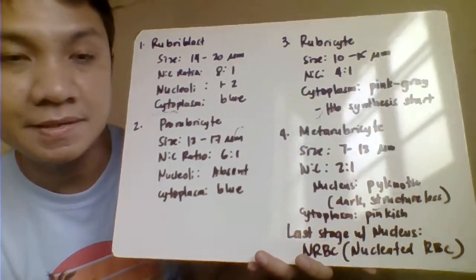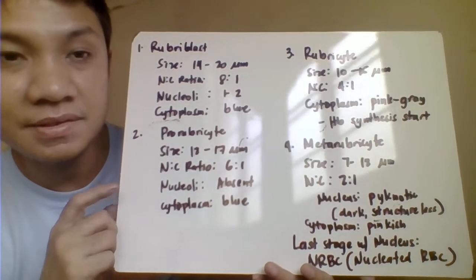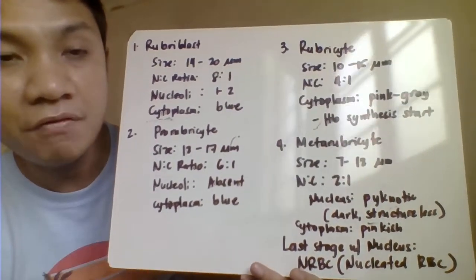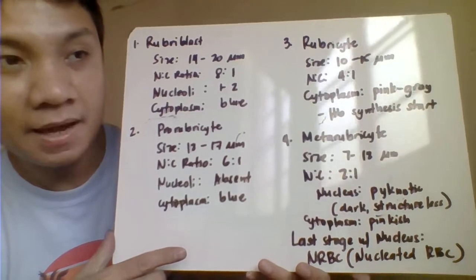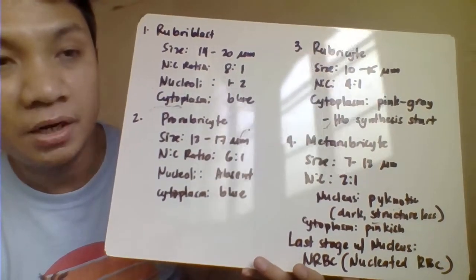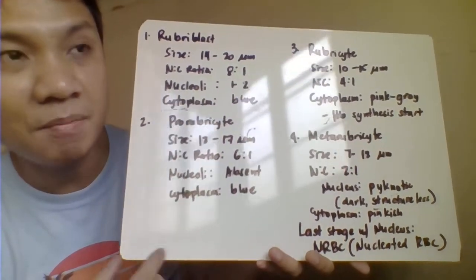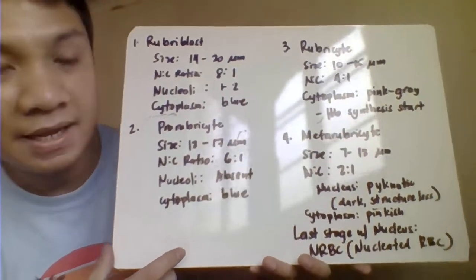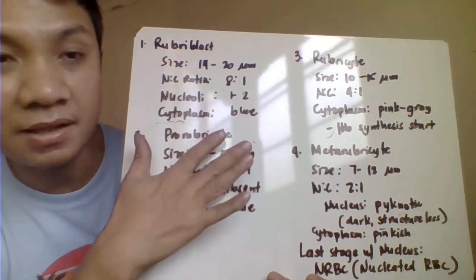The first cell stage in the rubri series, after CFU-erythroid acted upon by EPO, is the rubriblast. It measures 14 to 20 micrometers in diameter with a nucleus-to-cytoplasm ratio of 8:1 — the nucleus is much larger than the cytoplasm space. It is characterized by 1 to 2 nucleoli, blue cytoplasm because it is immature, and a fine or delicate nuclear chromatin pattern.